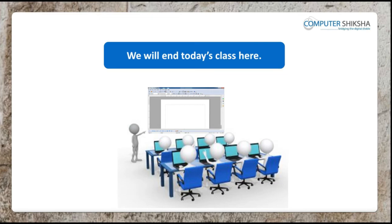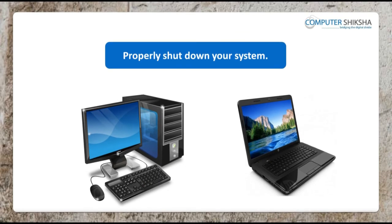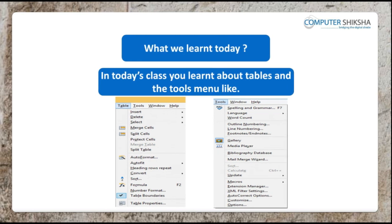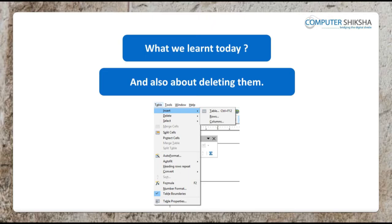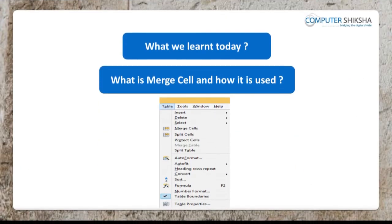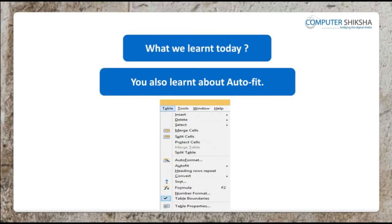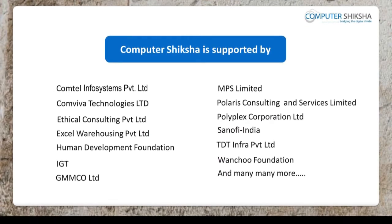Today's class will end here, so all of you close your Writer files and properly shut down your computers. In today's class you learnt about tables and the Tools menu — like inserting a table, inserting rows and columns and also deleting them, what is merge cell and how it is used, why we use the split cell. You also learnt about auto fit, convert, formula, properties, designing tables, and also about line numbering.